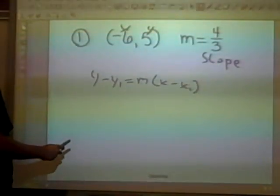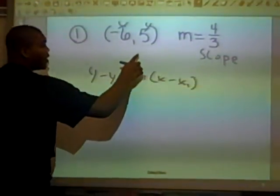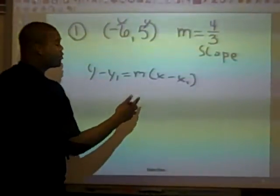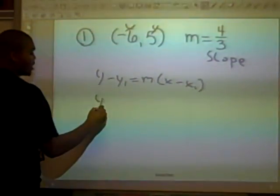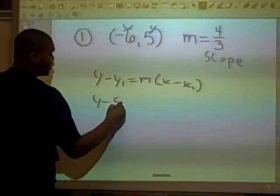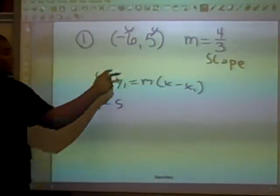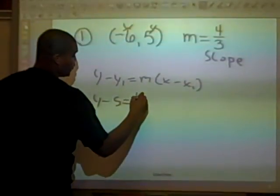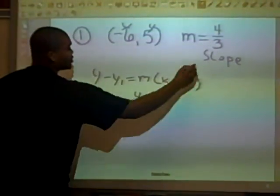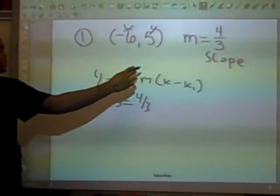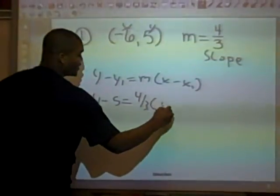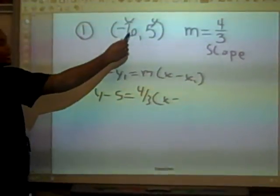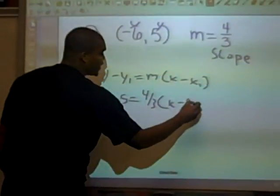Alright, right now what we're going to do, we're going to plug in our players into the play and help them know where they have to go. So, Y minus 5, because that's our Y, and Y1 goes right there, equals 4 over 3, which is our slope, because M is the slope. X minus X1, there's our X right there, which is a negative.